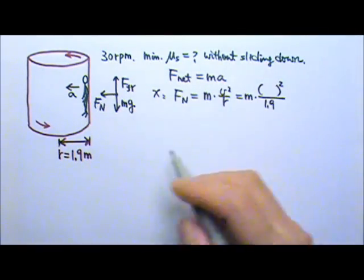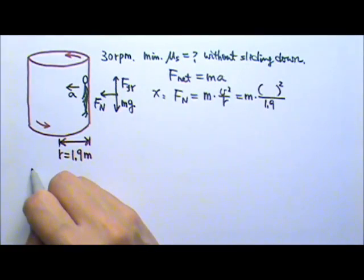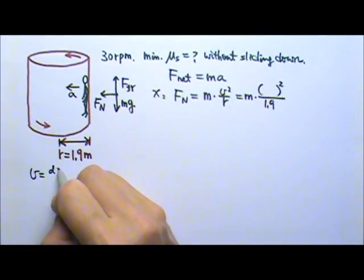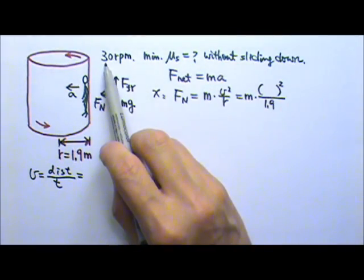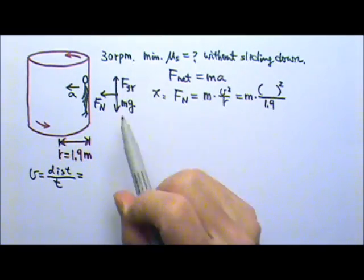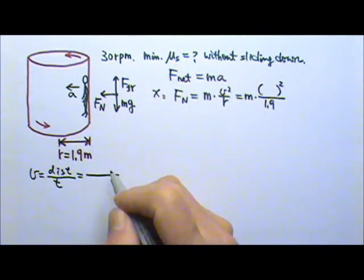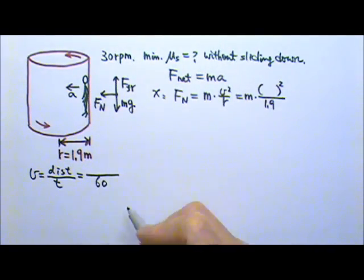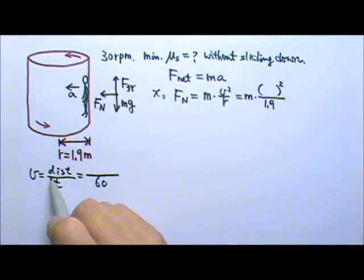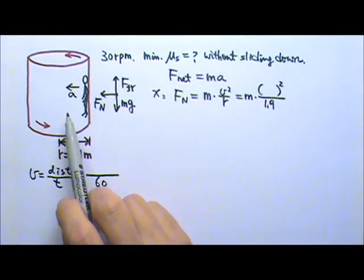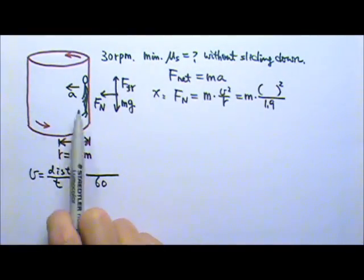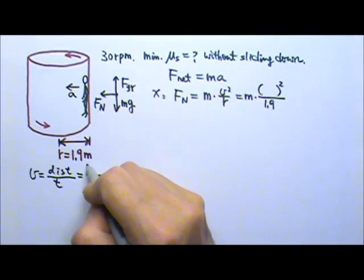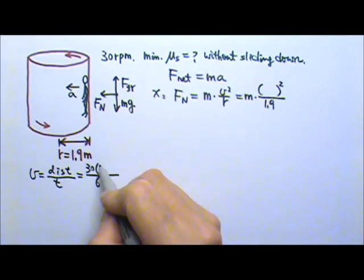And the radius is 1.9. So let's find the speed. The speed is the distance traveled divided by the time. And in this case, since we know 30 revolutions per minute, it would be convenient for us to look at 60 seconds, 1 minute. The distance traveled in 1 minute is 30 revolutions, which means 30 circumferences. So it's 30 times the circumference, 2 pi r.